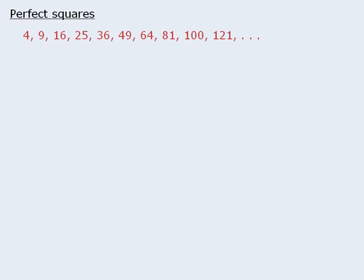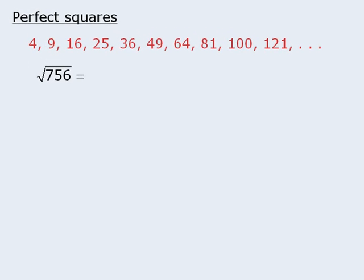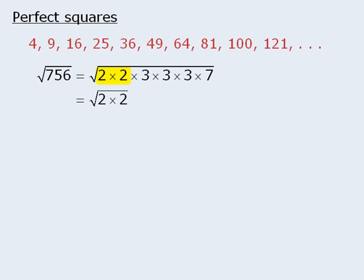Sometimes it may be difficult to take a number and rewrite it as a product where one number is a perfect square. For example, how would we rewrite 756? In these instances, another strategy is to first rewrite the number as the product of primes. If you don't already know how to do this, you might want to learn how in the integer properties module. Once we have rewritten the number as the product of prime numbers, we can group the prime numbers in identical pairs. We can take these two 2s and treat them separately, and similarly we can treat these two 3s separately. We have no identical pairs remaining, so we treat the remaining product separately as well.